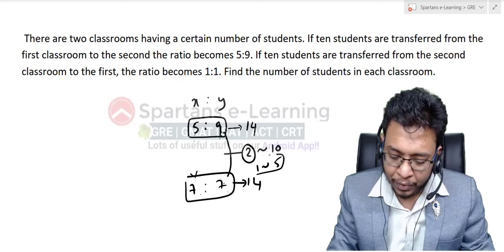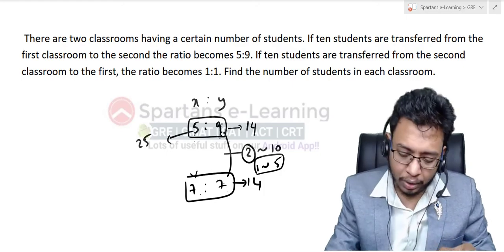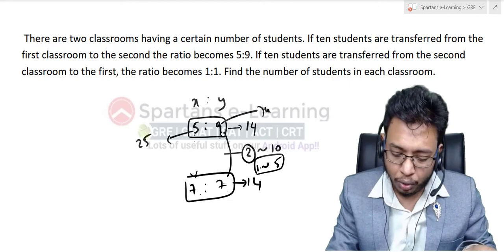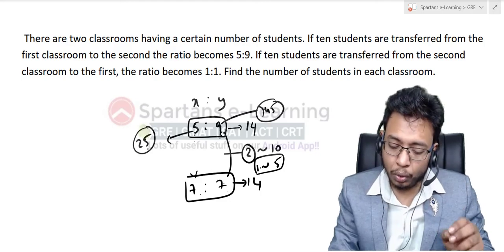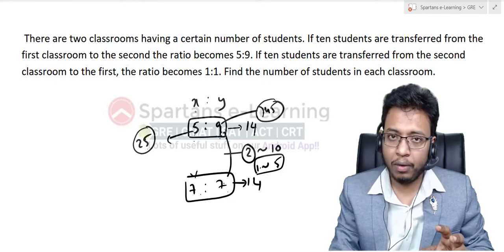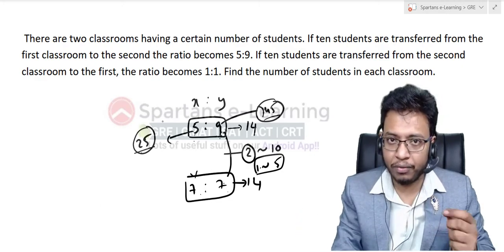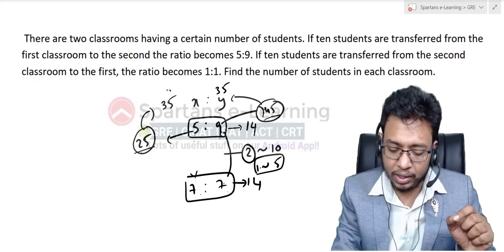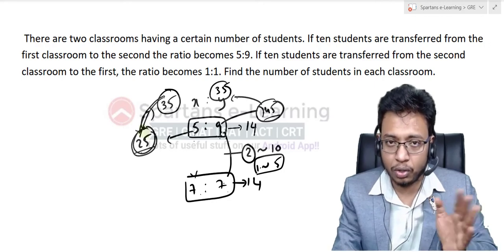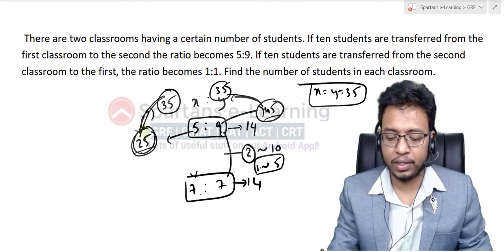Since 1 part equals 5: the value of 5 parts is 25, and the value of 9 parts is 45. So after the first transfer, class x has 25 students and class y has 45 students. Backtracking to the original: class x had 25 plus 10 equals 35 students, and class y had 45 minus 10 equals 35 students. So x equals y equals 35.